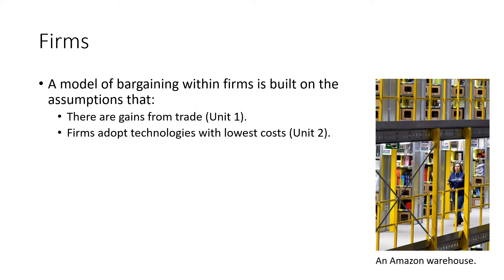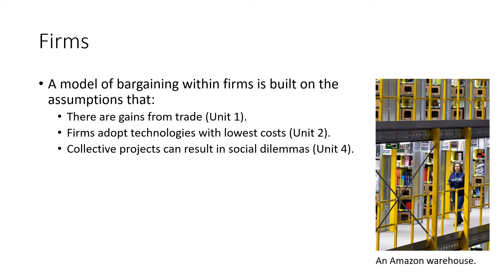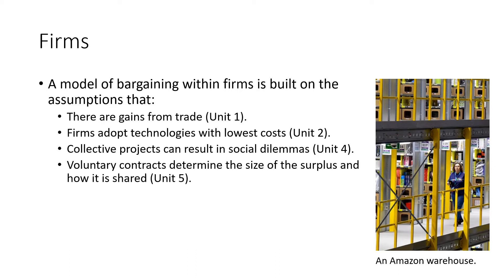We know that firms will adopt technologies with the lowest costs. From unit two, we covered the ISO costs with the coal technology example. Collective projects can result in social dilemmas — in unit four, we covered the tragedy of the commons, different types of games, prisoners' dilemmas, and so forth, where individuals' pursuit of self-interest leads to a less than optimal outcome. And voluntary contracts determine the size of the surplus and how it's shared — as in the Angela and Bruno model example, where different types of contracts determined the surplus and its allocation.